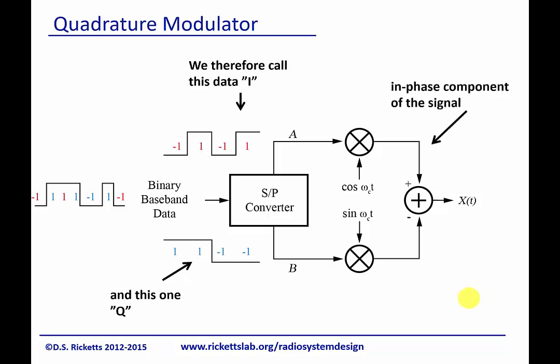and this one Q for quadrature. And likewise, this is the in-phase component of the signal, this is the quadrature component of the signal as we talked about in analog modulation.